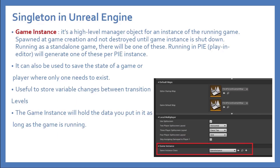One of those ways is the Game Instance — it's a high-level manager object that's already running, already provided by the engine for you. It's part of the Unreal Engine gameplay framework. You can also make a single Game Instance class and customize it as you see fit for your game. It will be created and spawned at game creation and destroyed when your game is shut down.